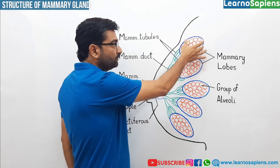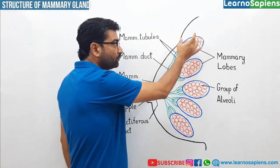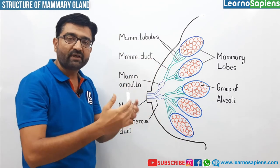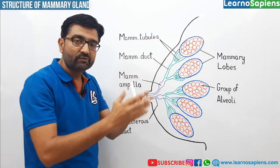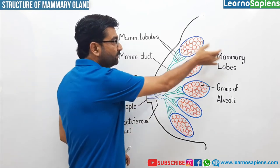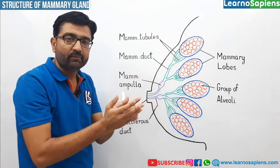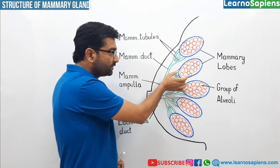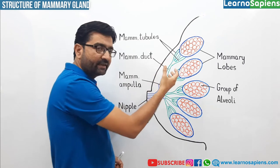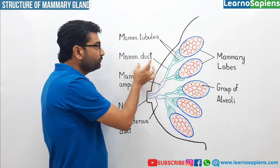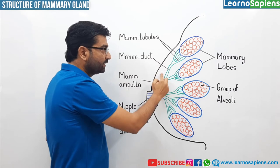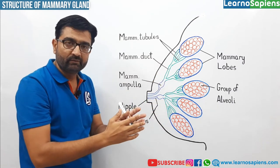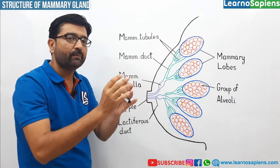Memory lobe ke andar dheer group of alveoli, aur har eek alveoli se memory tubules arise hoti hai. Yee memory tubules jab memory lobe ke baahir nikalti hai, toh yee sab ki sab join kar jati hai. Har eek memory lobe se kai sare tubules nikal leti hai — they join to form the memory duct. Har eek lobe ki memory duct — memory tubules join karke memory duct banati hai.